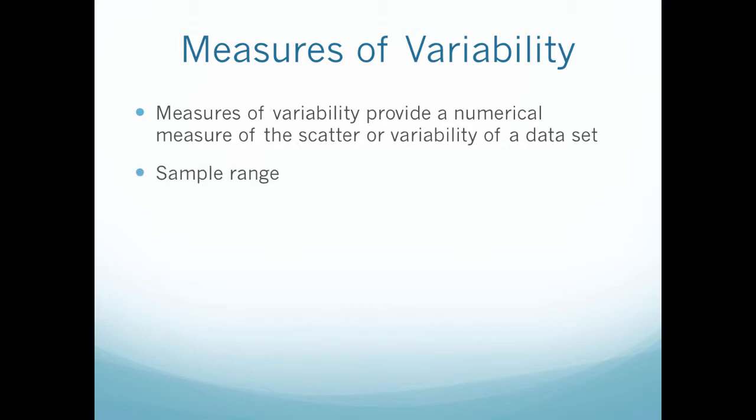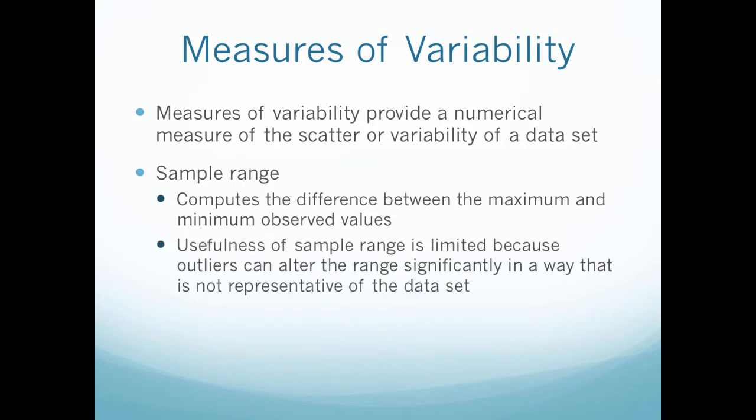Sample range is the simplest measure of variability. It computes the difference between the maximum and minimum observed values. The usefulness of the sample range is limited because outliers can alter the range significantly in a way that is not representative of the data set.